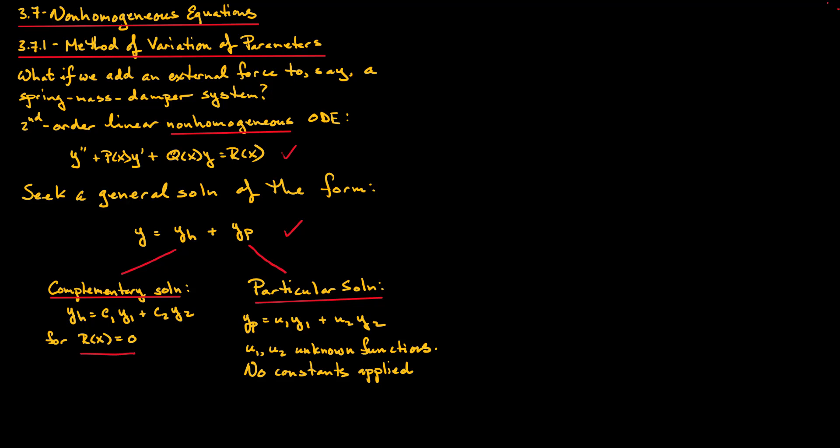The solution YP is called the particular solution. What we do is use the two fundamental solutions Y1 and Y2 for the associated homogeneous ODE, and we vary the parameters by seeking two unknown functions, U1 and U2, by which we multiply Y1 and Y2. So our job is to determine what these functions U1 and U2 are. Since we have two unknowns, we will need two equations.